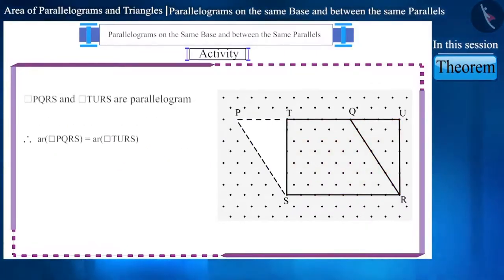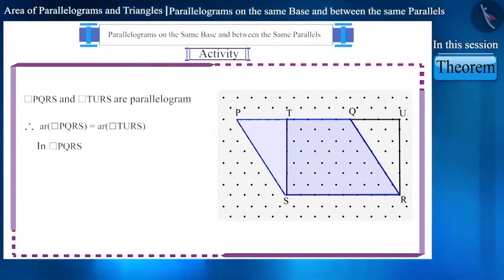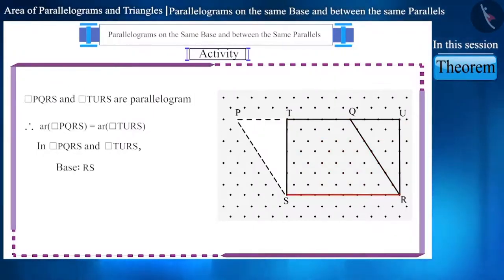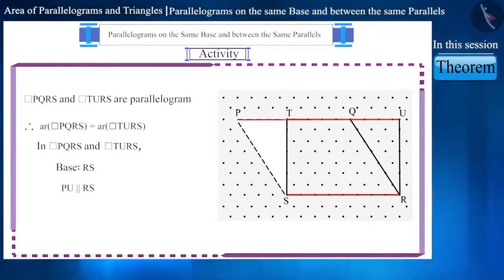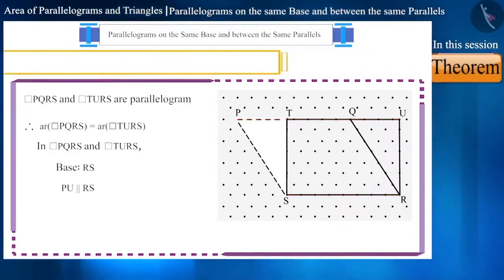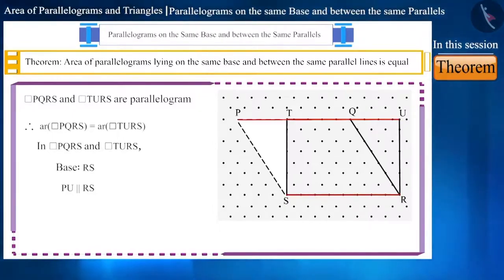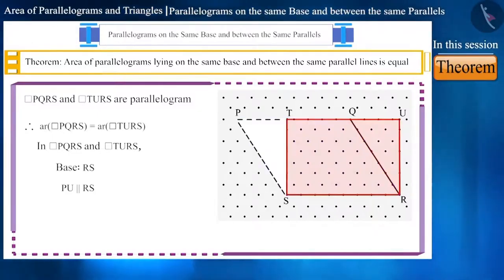Parallelograms PQRS and TURS are located on the same base RS and between the same parallel lines PU and RS, and their area is also the same. This is a theorem that states: the area of parallelograms lying on the same base and between the same parallel lines is equal.